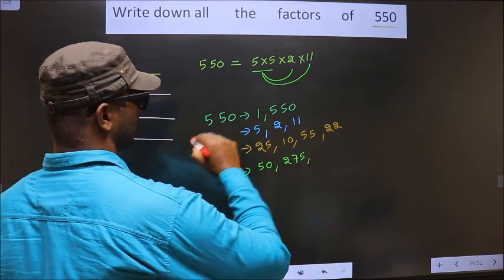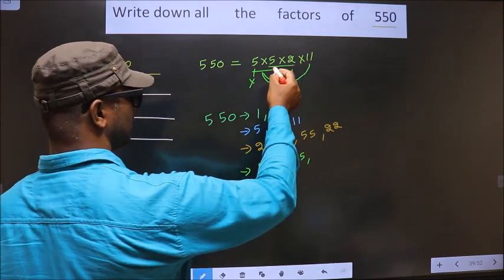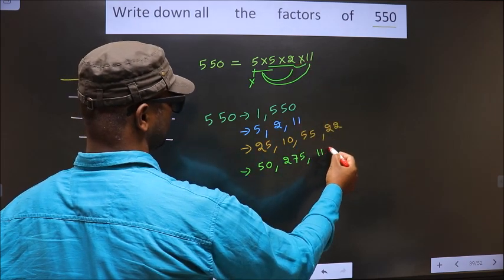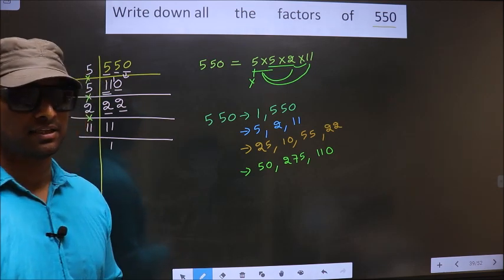Now you leave this 5, take these 2 numbers. 5 into 2 is 10, combine with 11. 10 into 11 is 110. So no more combination possible.